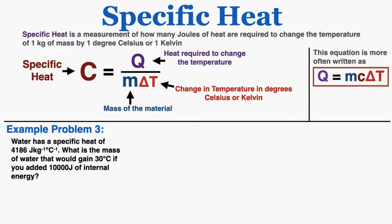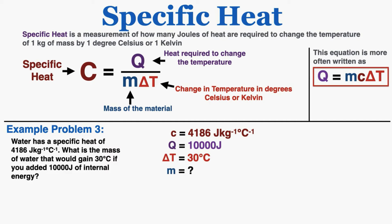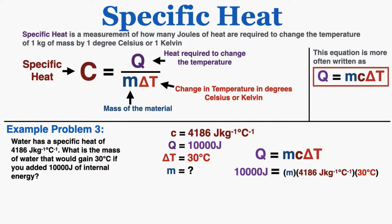In problem three, we're using water again. What is the mass of water that would gain 30 degrees Celsius if you added 10,000 joules of internal energy? Remember, internal energy is the same thing as thermal energy, and adding that is the same thing as heat — it's the change in thermal energy. Plugging the known values into the equation and isolating mass gives a final answer of 0.08 kilograms.